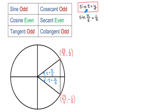In place of t, let's have negative t, which is negative pi over 6. Then we will have sine of negative pi over 6 equals negative 1 half.